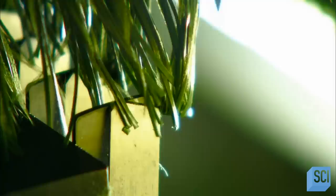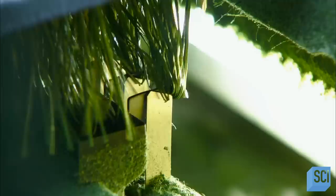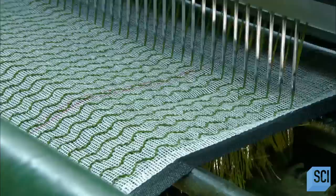Underneath, small knives cut the looped yarn, so it looks like spikes of grass. As you can see, this process is a whole lot faster than waiting for grass to grow.